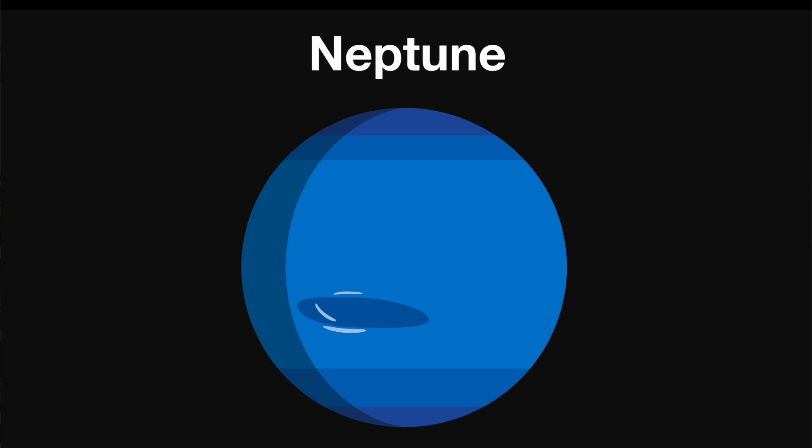Like Uranus, Neptune is referred to as an ice giant, as it's very cold. It also contains atmospheric water and other ice-forming molecules.